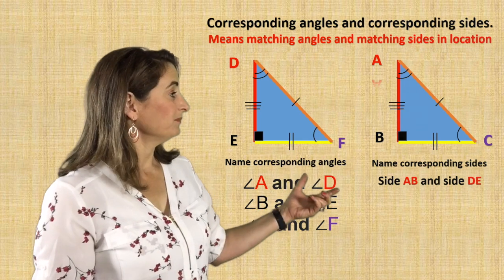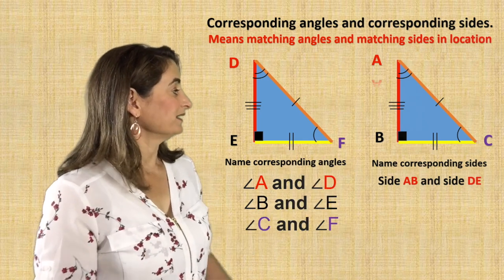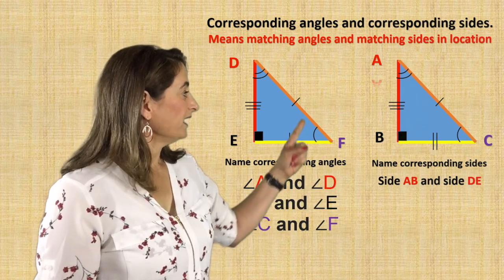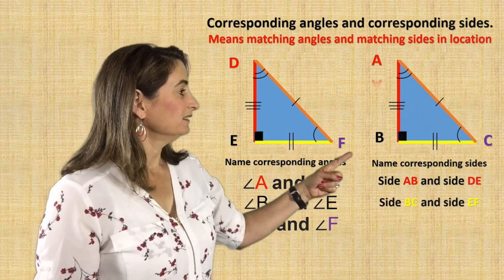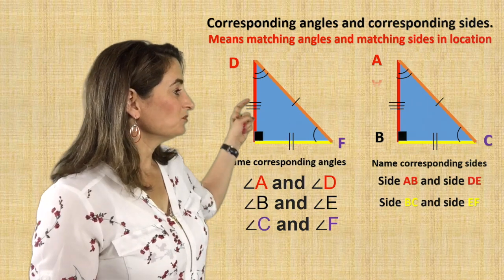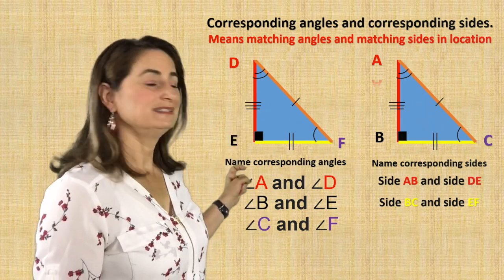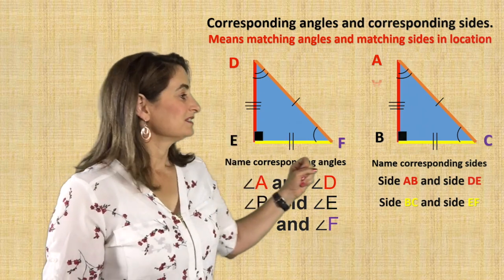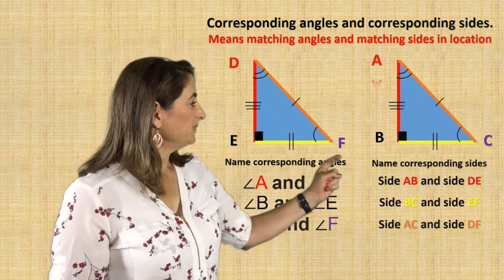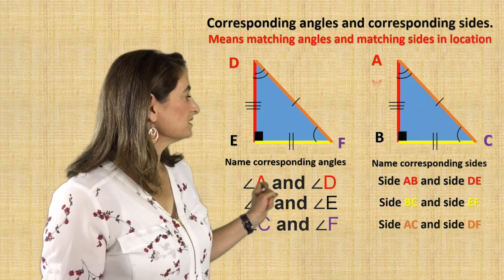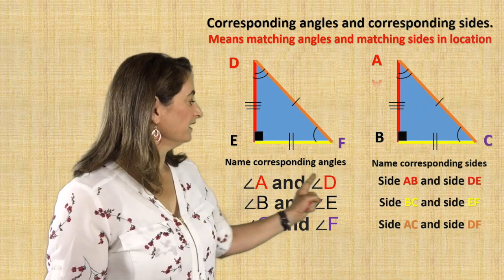Now let's name the corresponding sides. Side AB corresponds with side DE. Side BC corresponds with side EF.